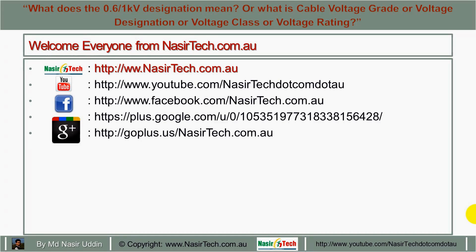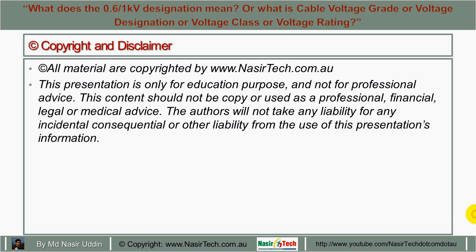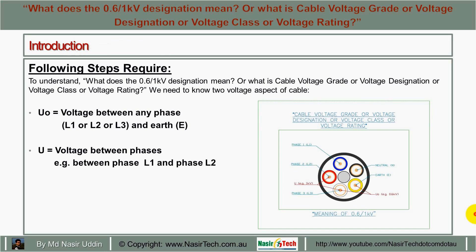Hello everyone from nasittek.com.au. Today I will explain what the 0.6/1 kV designation means, or what cable voltage rating is. To understand this designation, we need to know two voltage aspects of cabling.